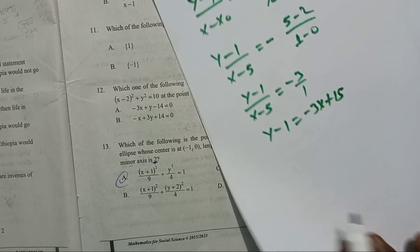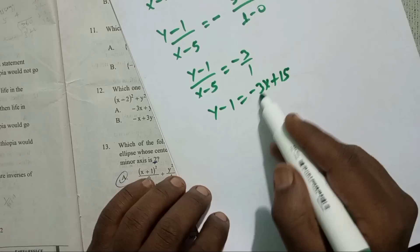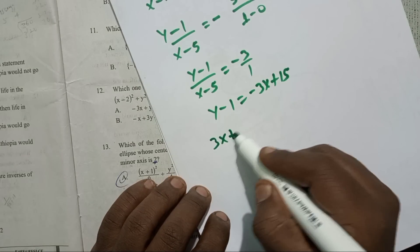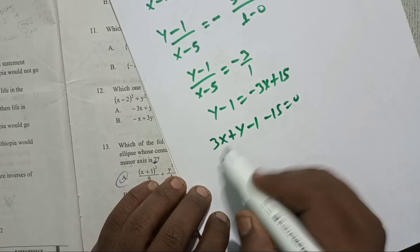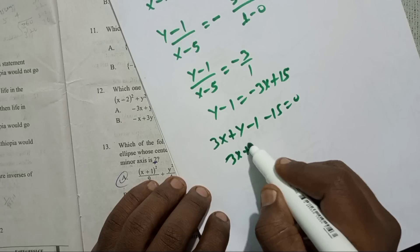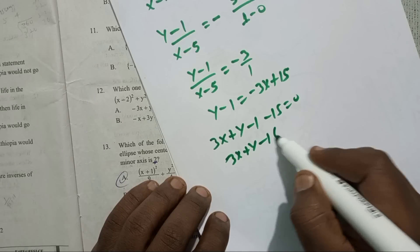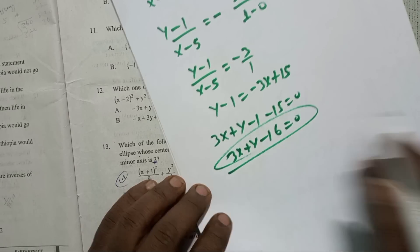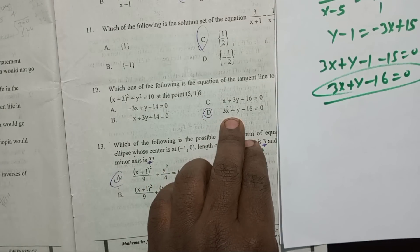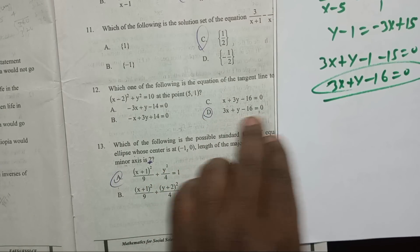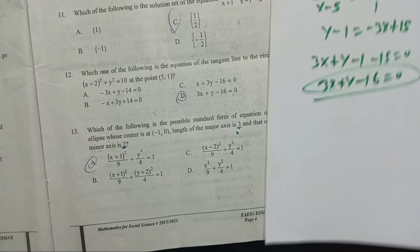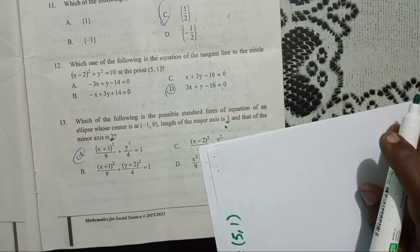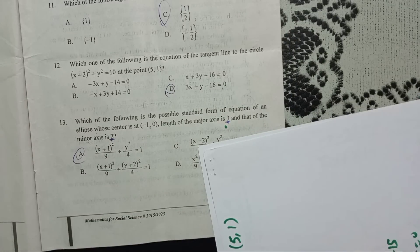So y minus 1 is equal to negative x plus 15. Then y minus 3 is equal to 3, giving us 3x plus y minus 15 equals 0. Therefore, 3x plus y minus 16 is equal to 0. This is the equation of the tangent line: 3x plus y minus 16 equals 0.